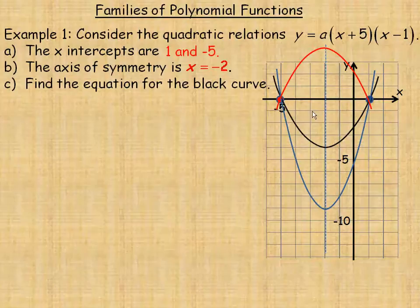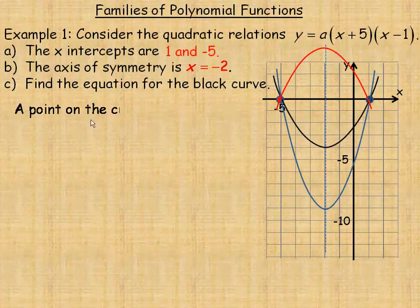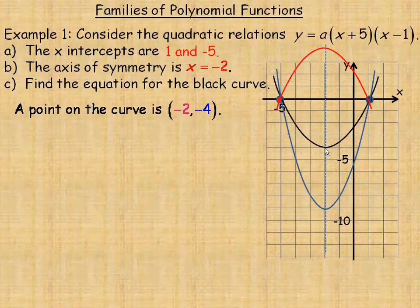Now, an equation for one particular member of this family, for example the black curve, this is the general equation, so we need to find a point on the curve. You can use any point you want. For example, negative 2, negative 4 is a point on this curve. It's a vertex.